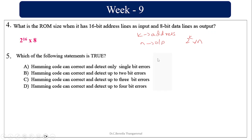Which of the following statement is true? Hamming code can detect up to 2-bit errors if you add one extra parity bit, but it can correct only 1-bit errors.